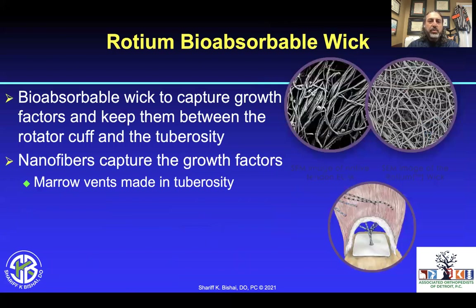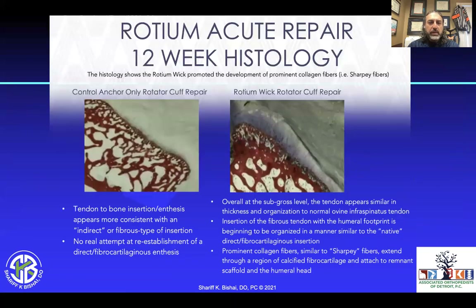The Rhodium bioabsorbable wick from Atrion is another new product. It goes under the rotator cuff as a wicking-type implant. When you perform marrow vents to get biology from the patient, this holds the material there underneath the repair — its nanofibers capture growth factors and allow for better rotator cuff healing. At 12 weeks, you can see the tendon-bone insertion with some indirect fiber-type insertion fibers. There's no real attempt to re-establish direct fibrocartilaginous synthesis, but with the Rhodium patch versus control, you see a thicker enthesis site, native direct fibrocartilaginous insertion, and increased Sharpey's fibers — demonstrating improved healing compared to control.